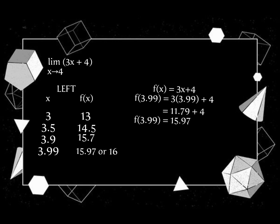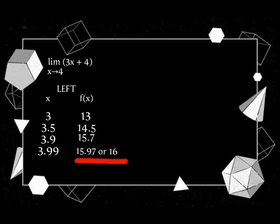We will round off, then we get 16. Therefore, the limit of 3x plus 4 as x approaches 4 from the left is equal to 16.